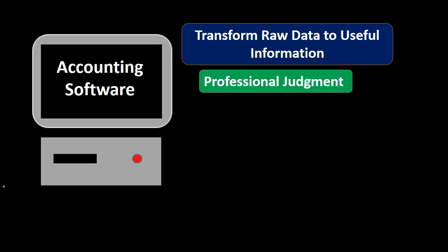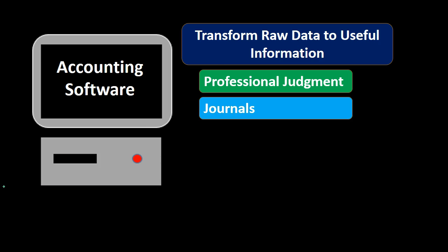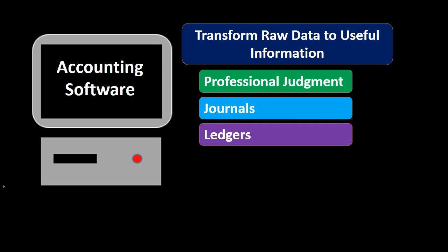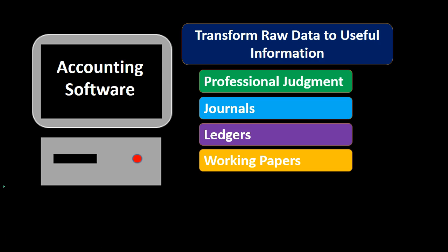We're looking at those types of things that can do that within this process — things like journals, things like ledgers, things like working papers. Those are going to be types of tools that can be useful for the processing of raw data into relevant form.